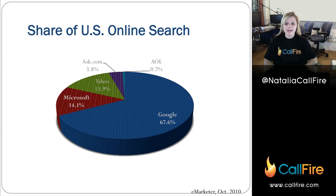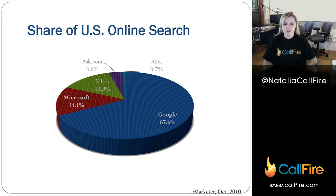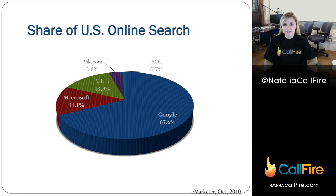From an eMarketer statistical survey this past October, we know that Google has about 67% of the U.S. online search. Microsoft has about 14%. So you can see there's a big difference there. That means that your clicks will be a lot less expensive on Microsoft. So when you're transferring campaigns, keep in mind that you can probably be paying about a quarter per click on Microsoft as what you are paying on Google.